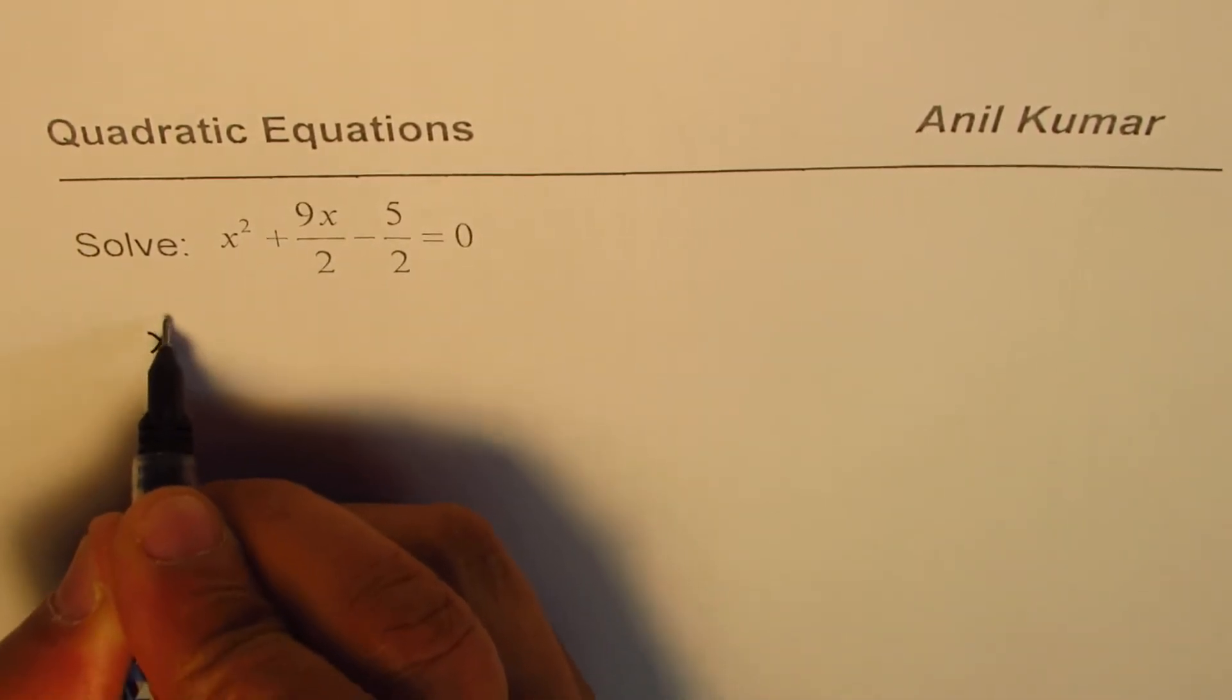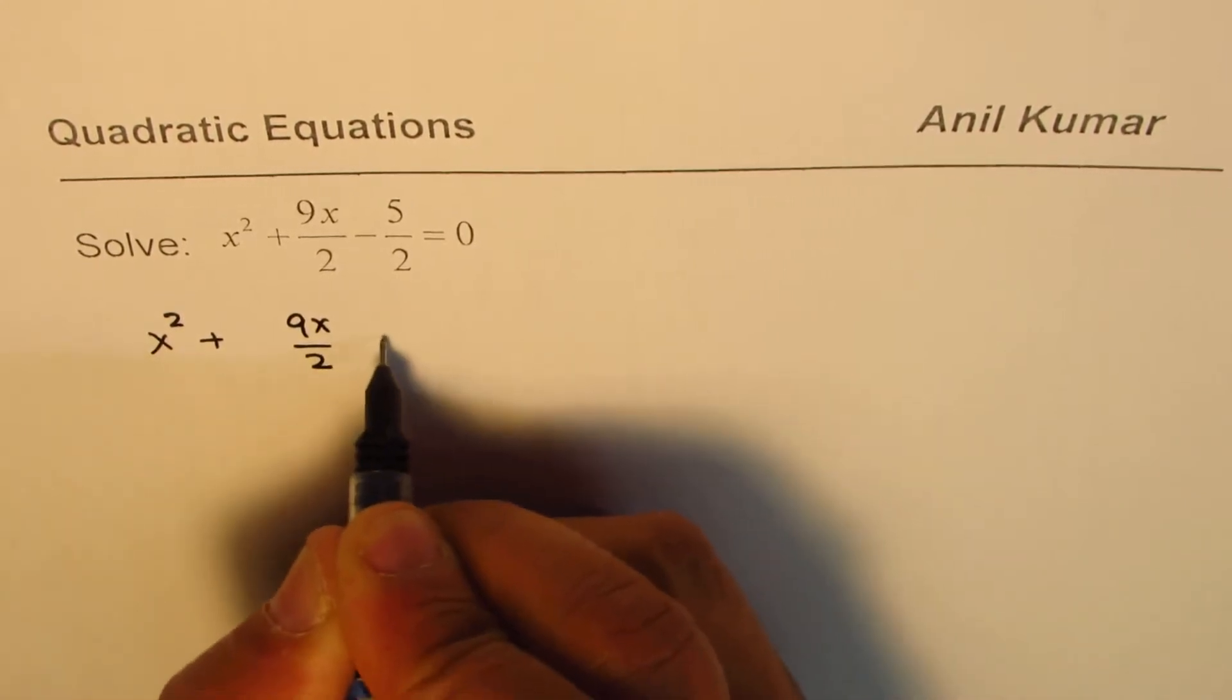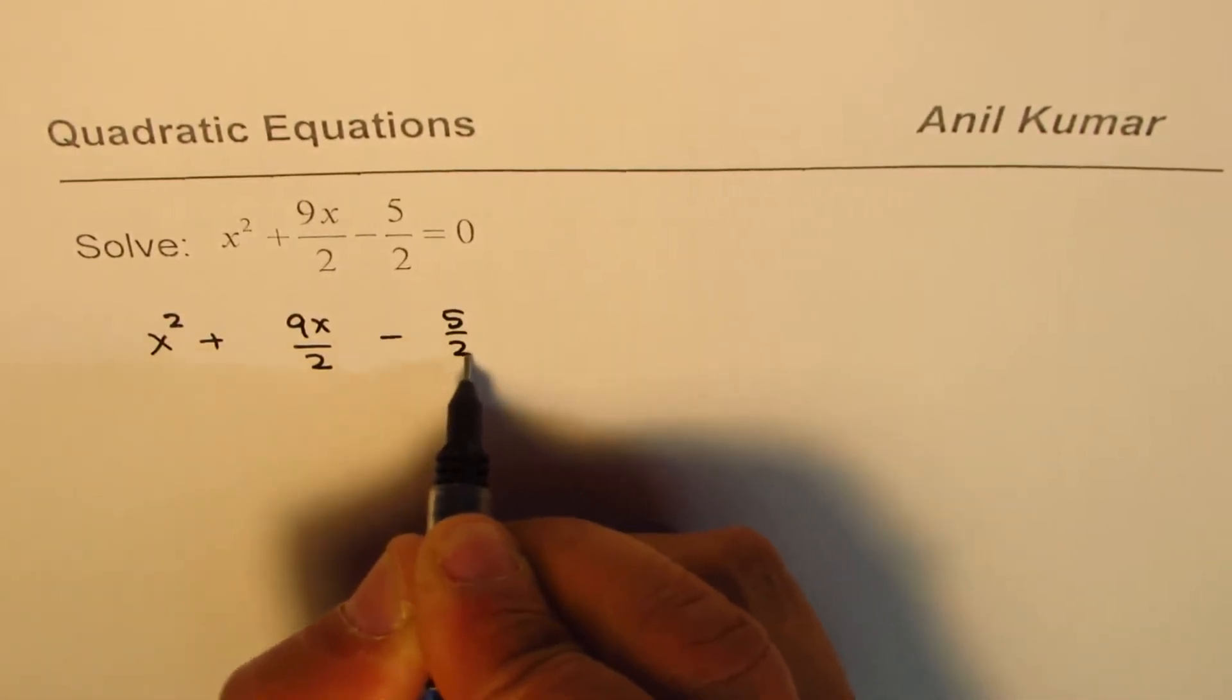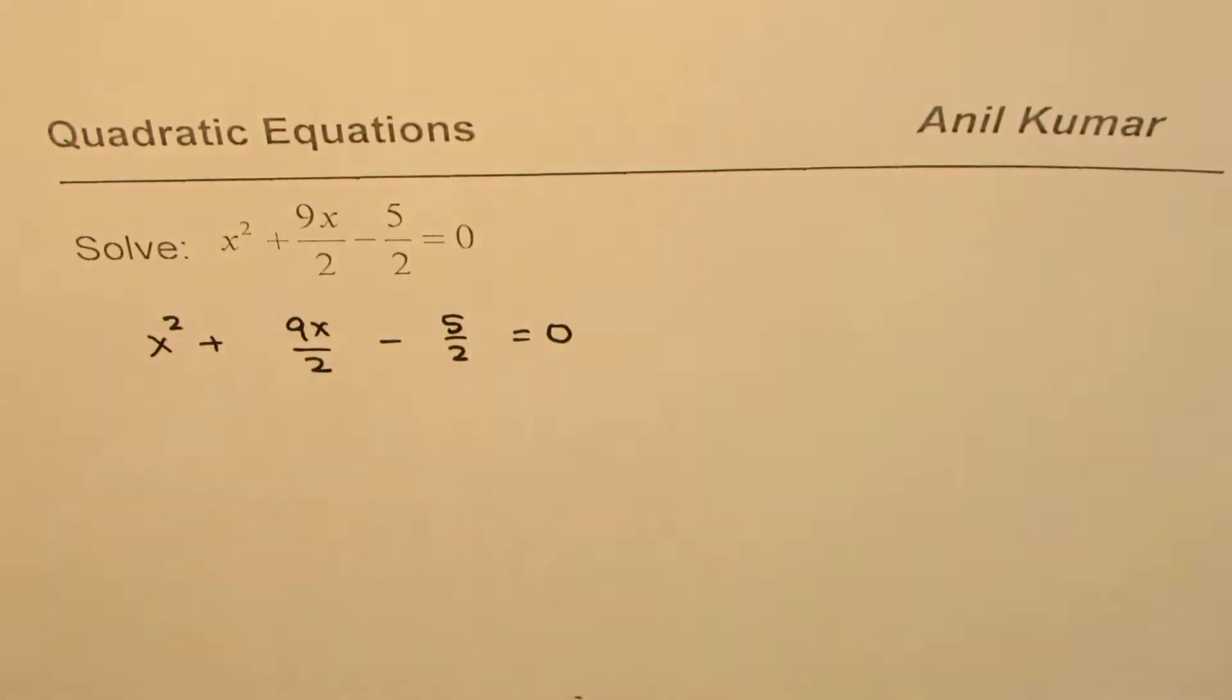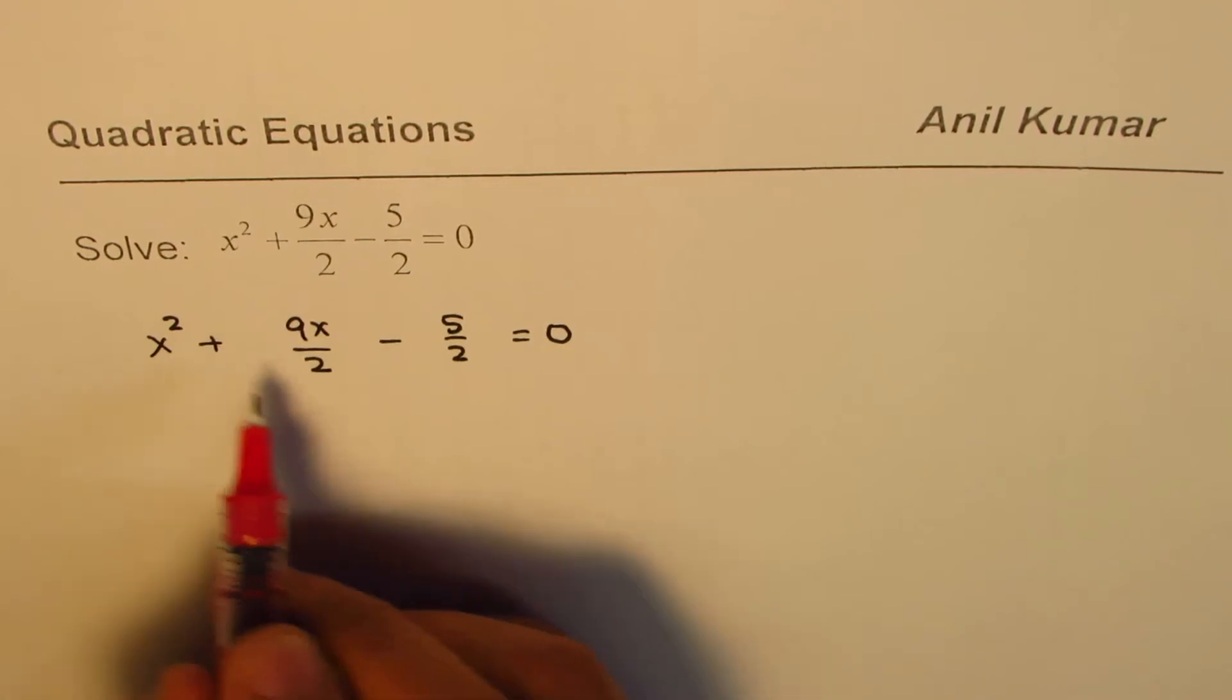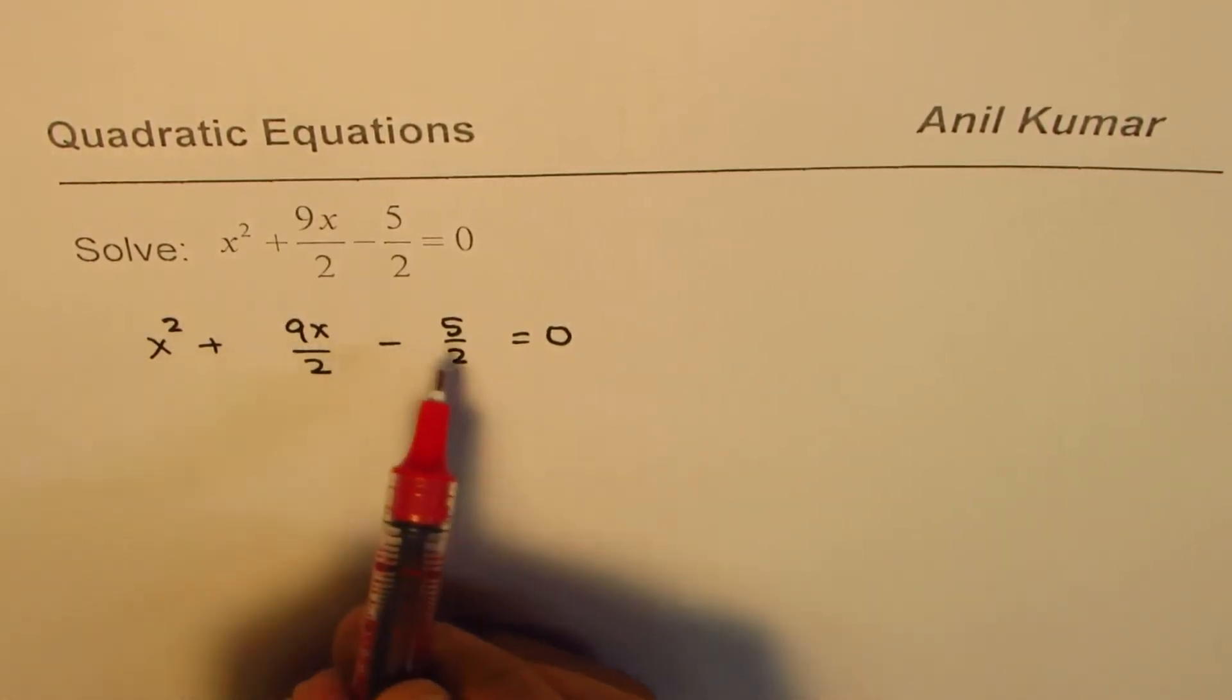Let me rewrite the equation: x² + 9x/2 - 5/2 = 0. You see there is 2 in the denominator. If you want to get rid of it, we need to multiply each term by 2.